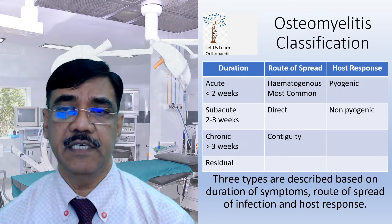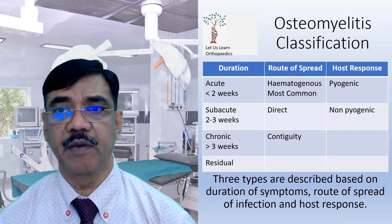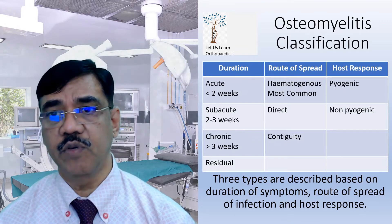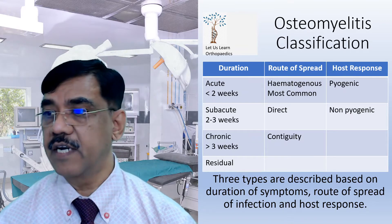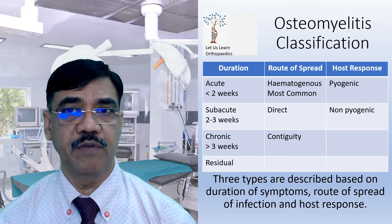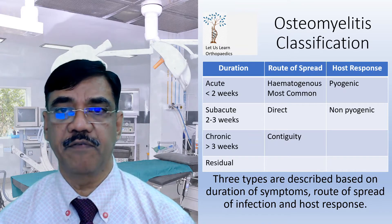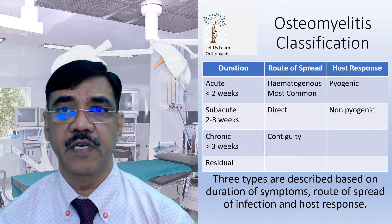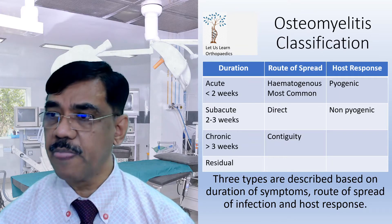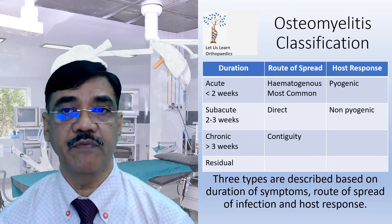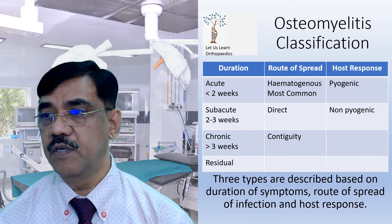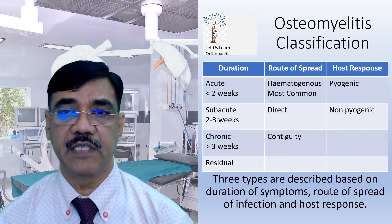Osteomyelitis is classified depending upon three things: the duration of the symptoms, the route of spread of infection, and the host response. Depending upon the duration of the symptoms, it can be classified into four groups: acute osteomyelitis when duration is less than two weeks; sub-acute osteomyelitis when duration is between two to three weeks; and chronic osteomyelitis when duration is more than three weeks.